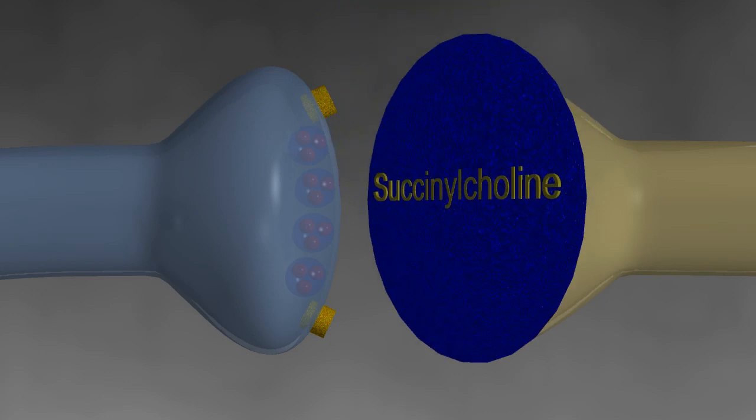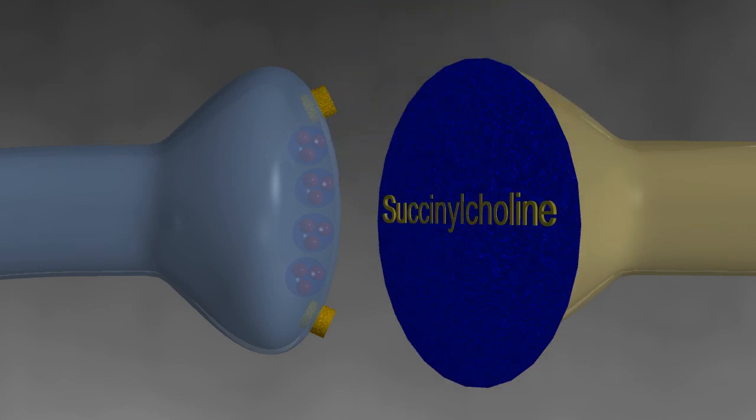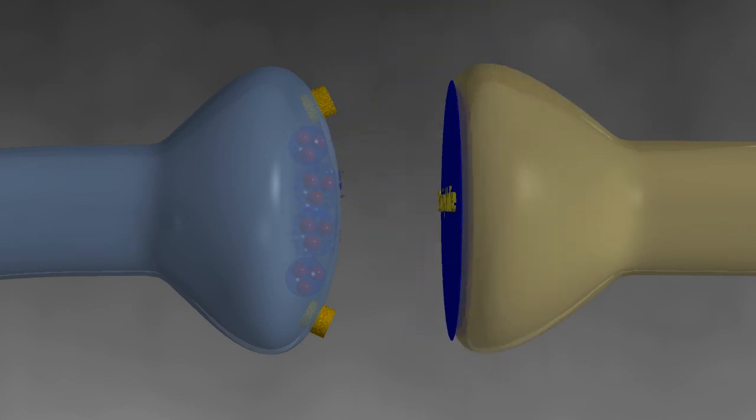Succinylcholine is a medication used in the field of medicine that induces paralysis in patients to facilitate intubation or treat malignant hypertension by blocking the postsynaptic receptors of the neuromuscular synapse.